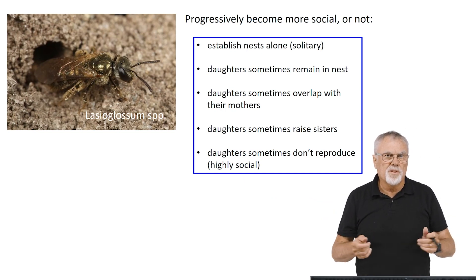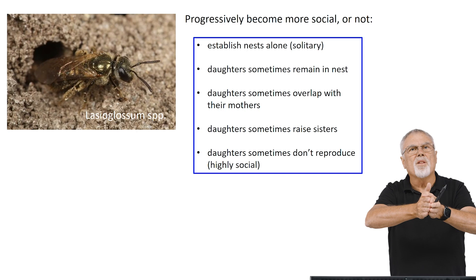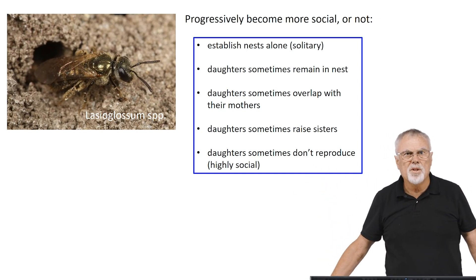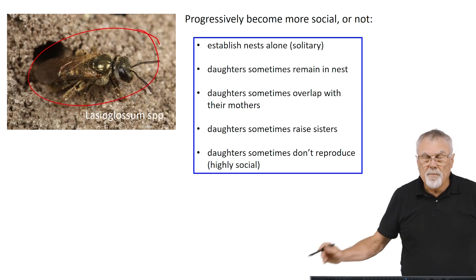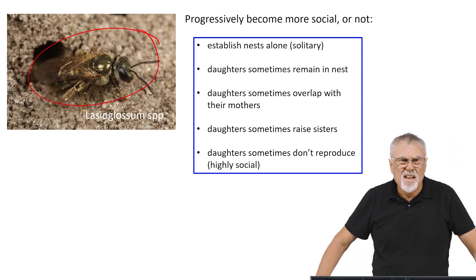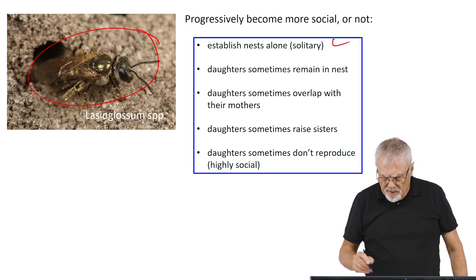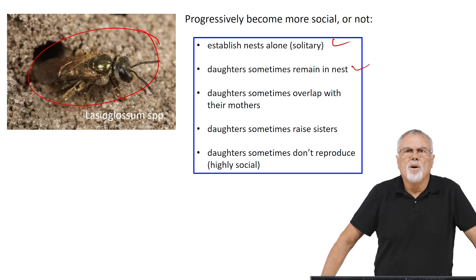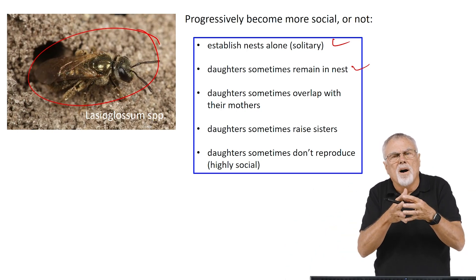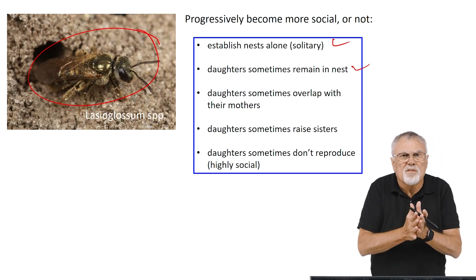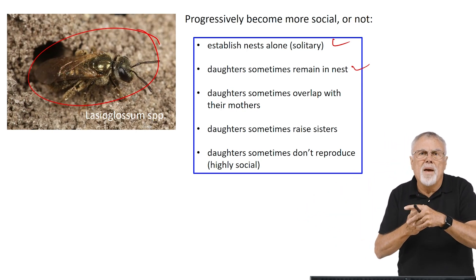Some species of social insects go through different levels of sociality as the colony develops. This is a case of Lasioglossum, which is a sweat bee. Females will form a nest on their own — they're solitary — and they will raise their first batch of offspring on their own. But sometimes the daughters will remain in the nest and help the mother, which is a very rudimentary form of a society, the beginnings of sociality. Sometimes the daughters don't stay, sometimes they just leave, sometimes the mother dies before the daughters emerge.